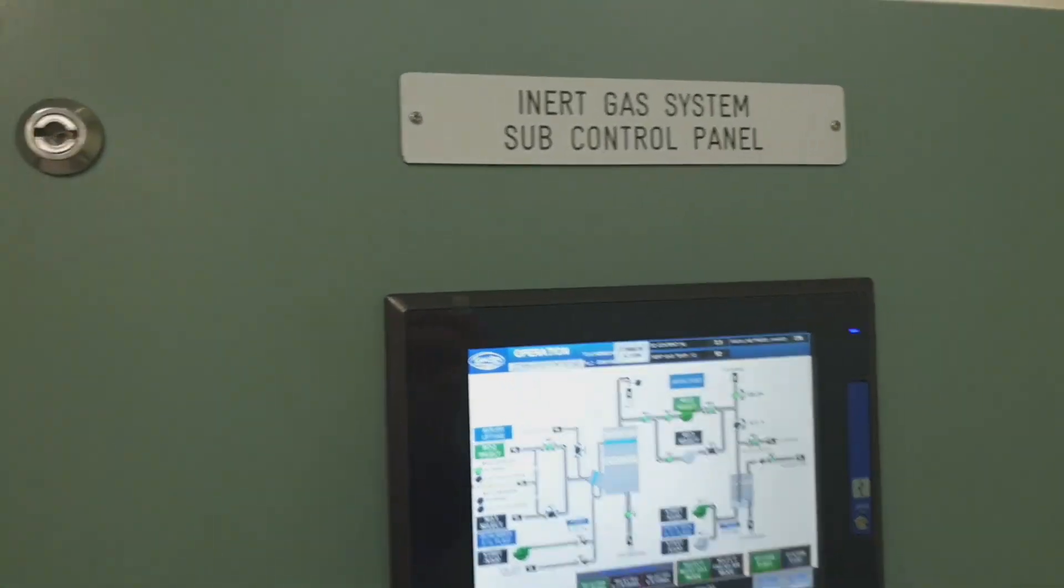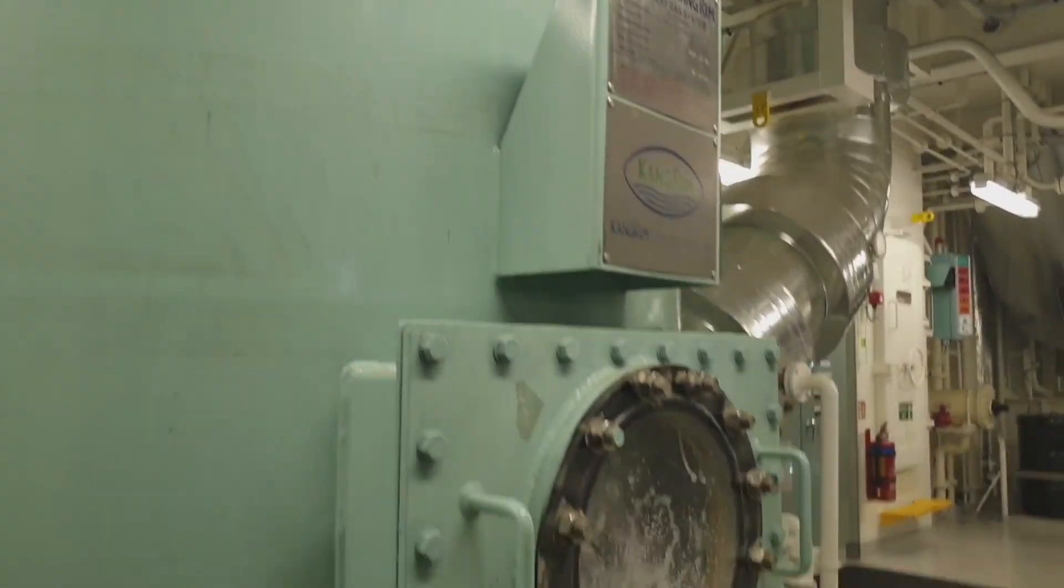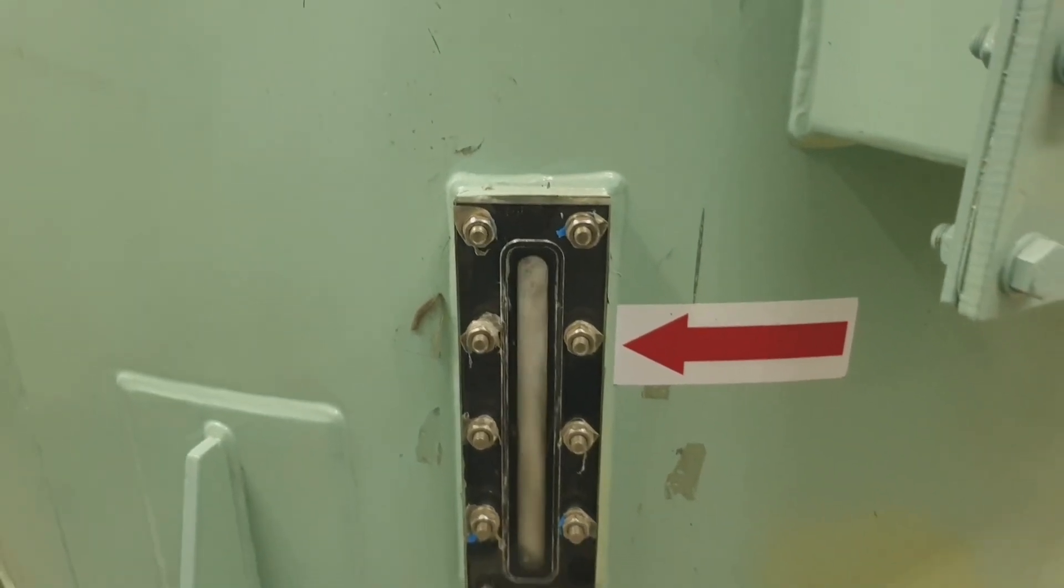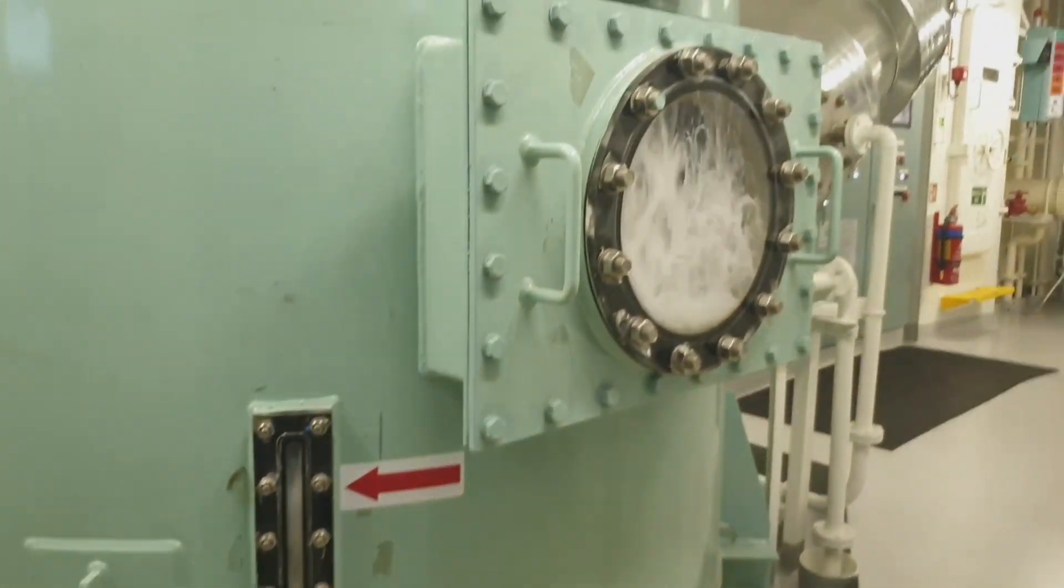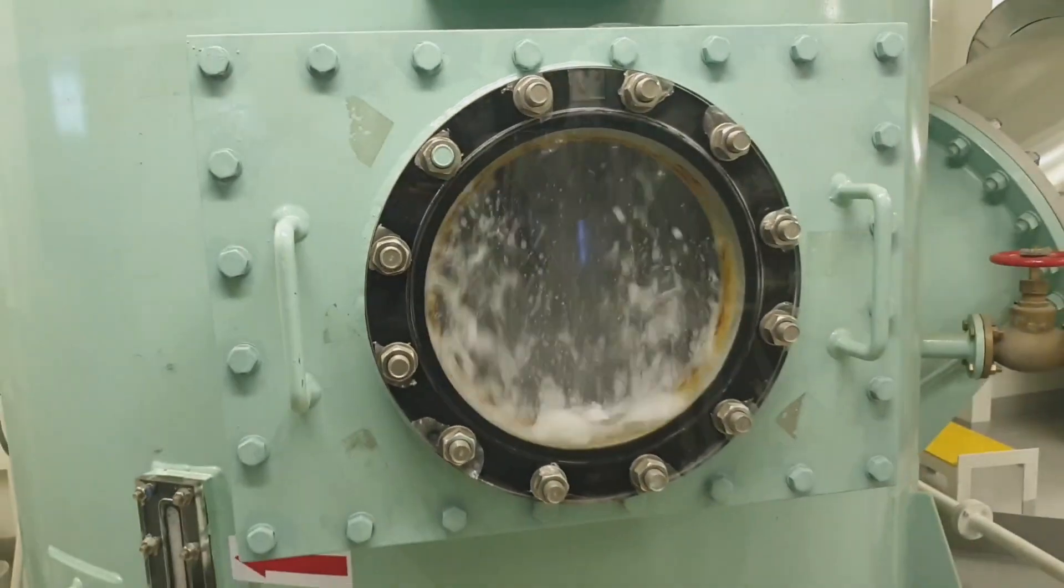This scrubber tower operates at the maximum of 400 degrees Celsius of flue gas inlet temperature. And this system is fully equipped with safety protective and monitoring devices for safety reasons.